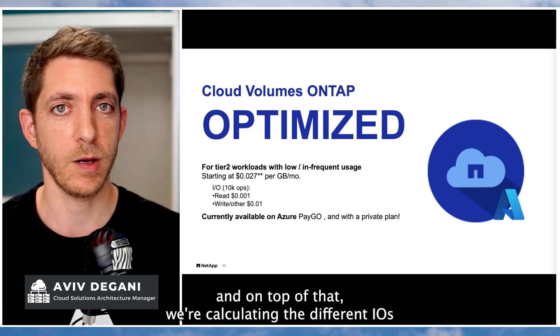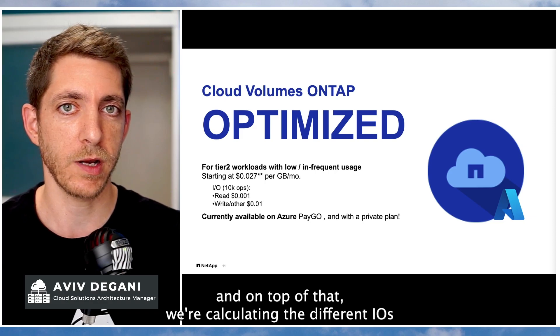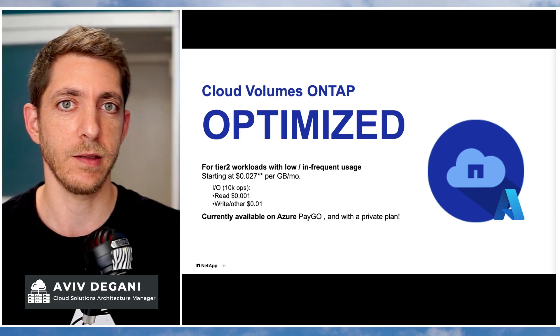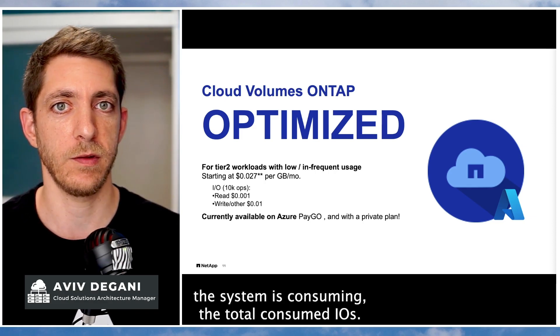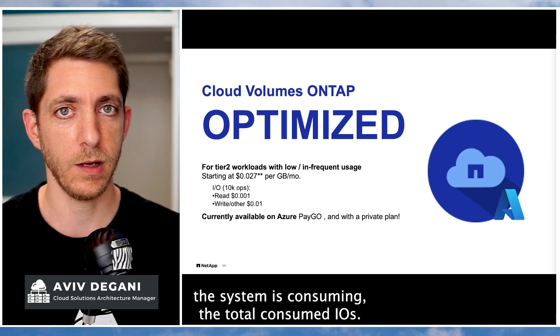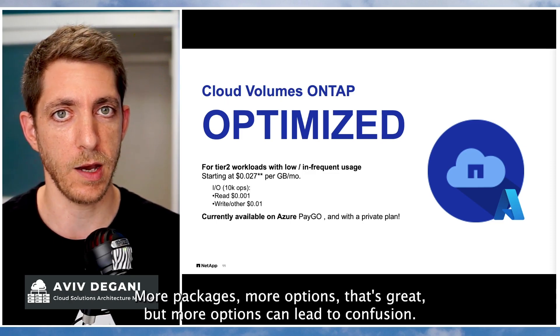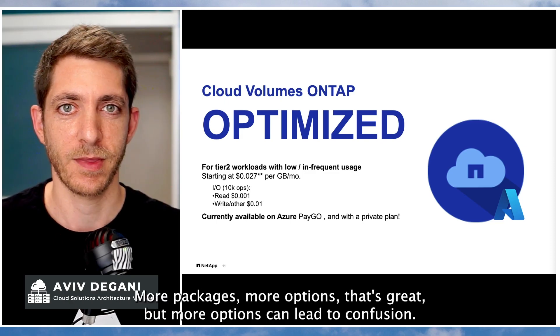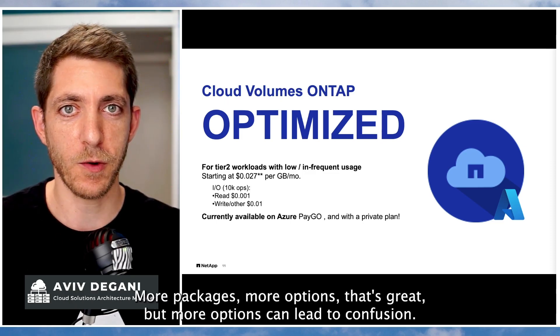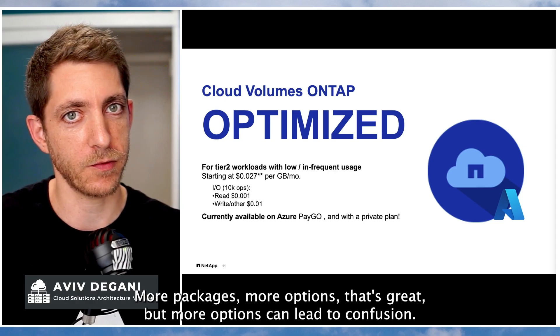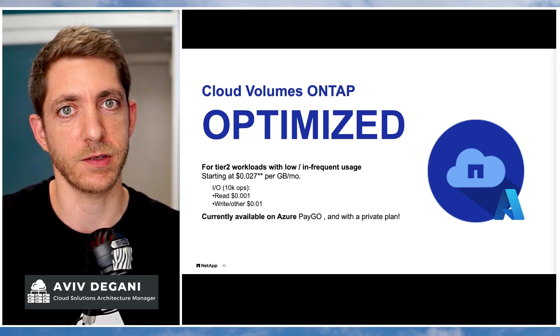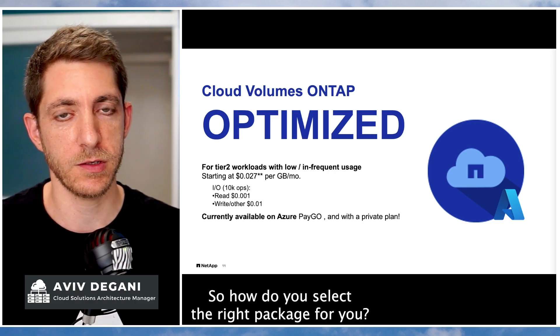On top of that, we're calculating the different IO the system is consuming — the total consumed IO. So more packages, more options — that's great — but more options can lead to confusion. So how do you select the right package for you?